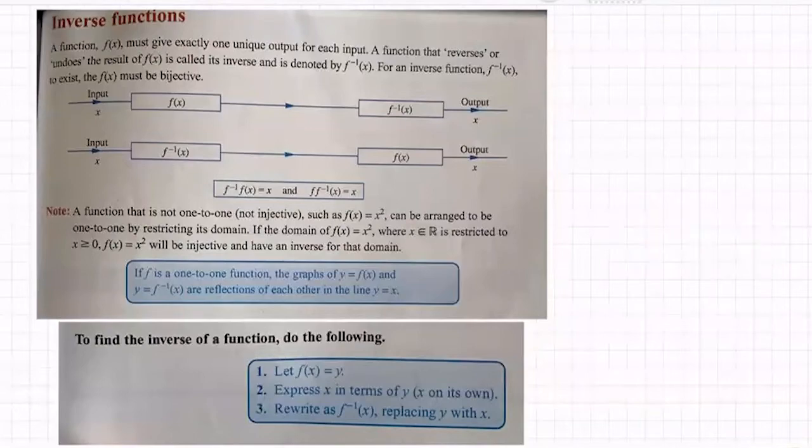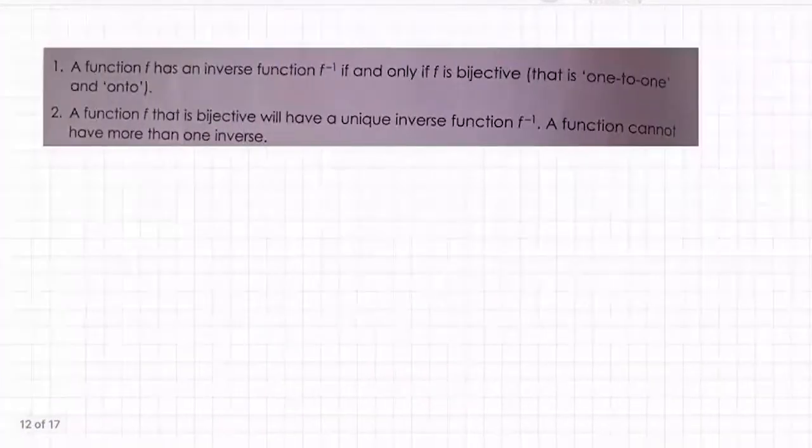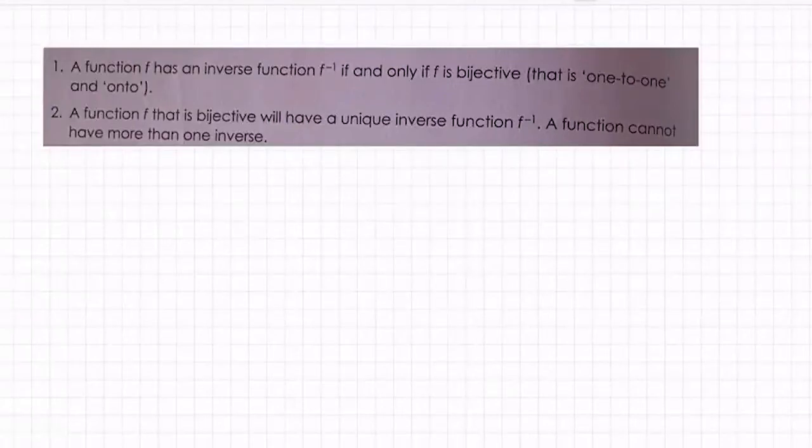Again, two notes: a function f has an inverse function f inverse if and only if it is bijective. That is a one-to-one and onto function - so it's injective and it's surjective. A function f that is bijective will have a unique inverse function f inverse. A function cannot have more than one inverse.